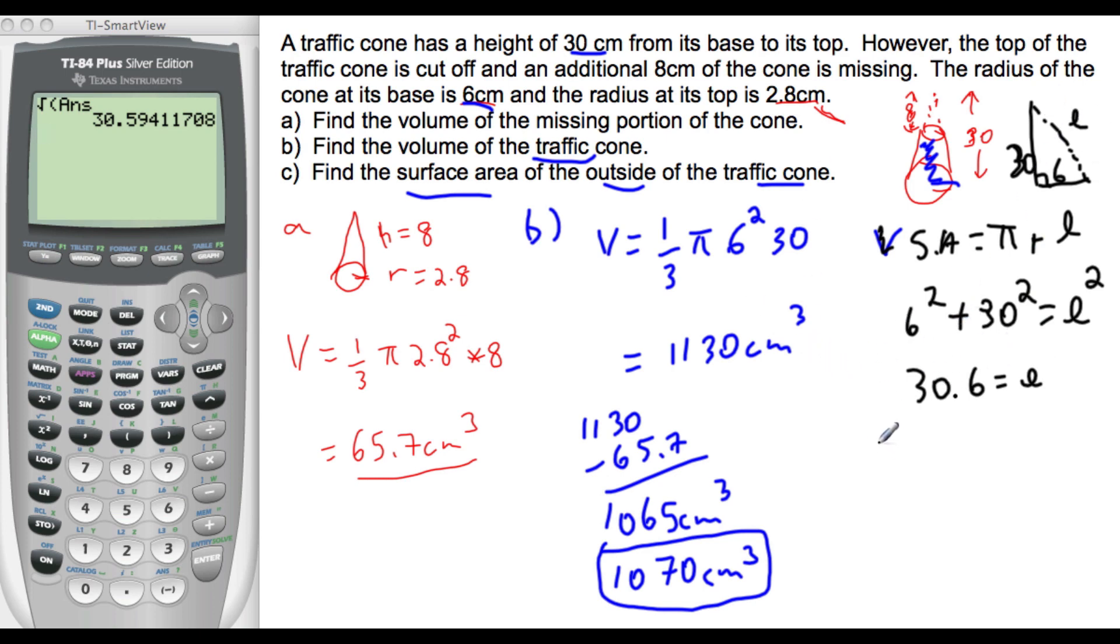Then the surface area is pi, radius of 6 and slant height of 30.6, which equals 576.7.